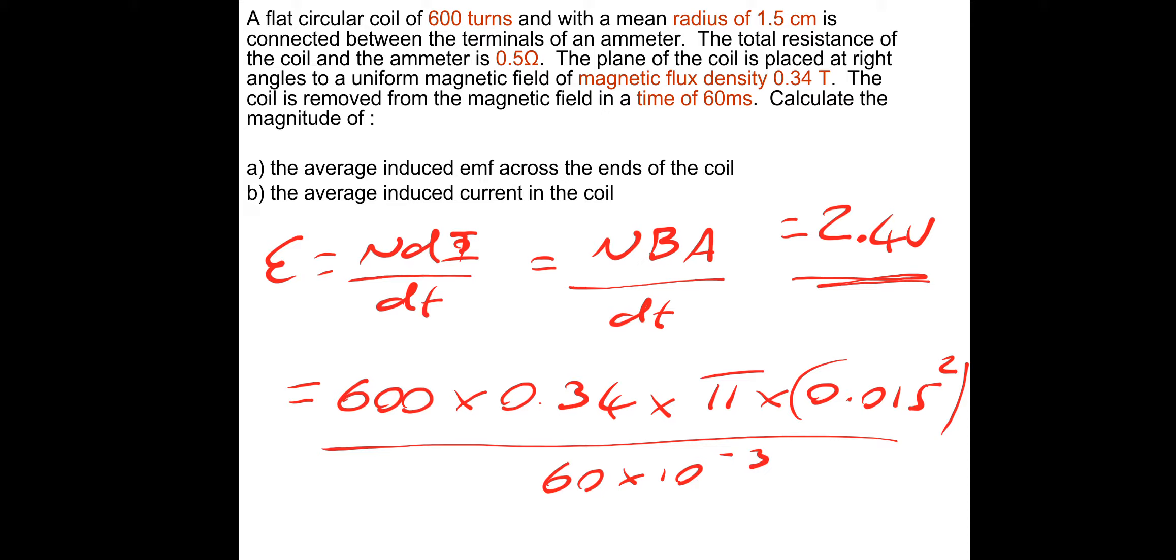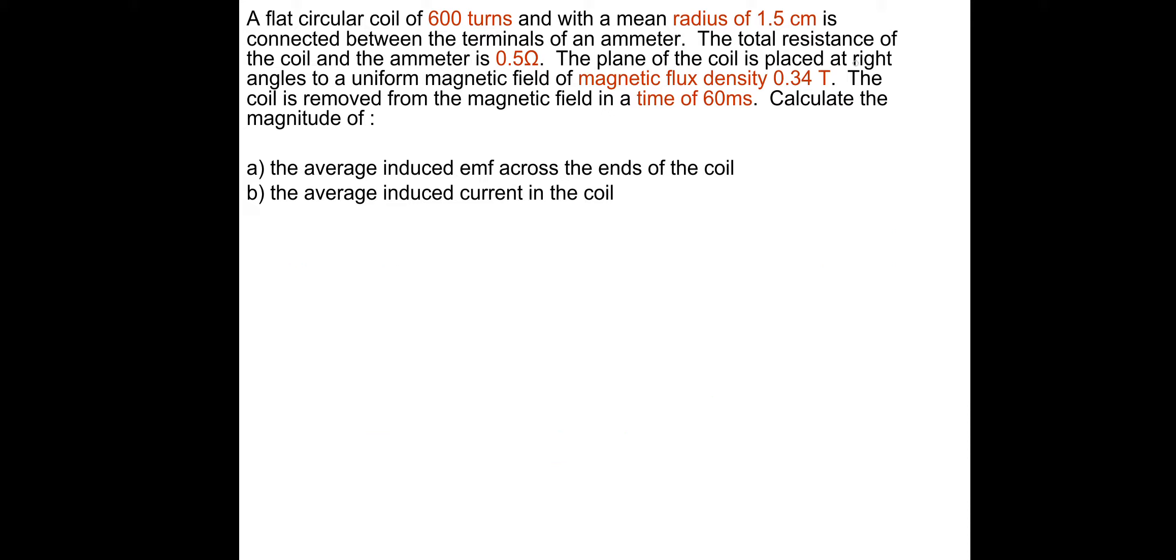So I'm going to clear this and then do part B, which is very straightforward now. So average induced current: current is voltage over resistance. So voltage is the 2.4 divided by a half, so that just doubled the 2.4 to give us a current of 4.8 amps. Hopefully that question went okay. Let's move on.